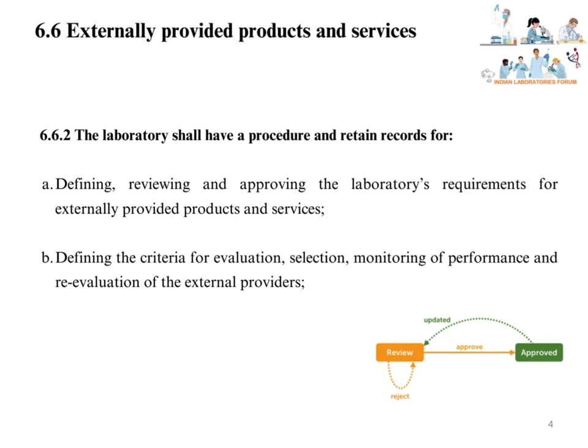For example: subcontracting labs should be ISO/IEC 17025 accredited. Similarly, calibration labs should also be accredited as per ISO/IEC 17025. Proficiency testing providers should be accredited as per ISO 17043, and reference standard providers should be accredited as per ISO 17034 or be a competent producer. Disposal agencies should be pollution control board approved. The laboratory must also define evaluation criteria such as quality of products received, critical consumable checks, receipt conditions, packaging condition, delivery time, etc.